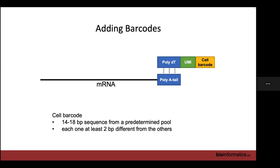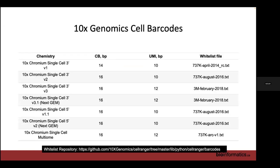Because these come from a predetermined pool, we need to know what that pool is. If you're doing 10x Genomics Chromium, you can go to their website, find out what version you're using, and download the appropriate whitelist of barcodes. If you're using a different technology, you'll need to find the whitelist for that technology. Depending on the version, barcodes are different lengths and sequences, so make sure you have the right one. CellRanger now has most of these built in and will try to guess which whitelist you're using, but it's always preferable to specify the right one to have zero chance of it guessing wrong.